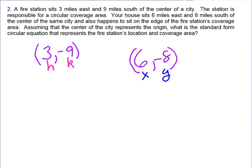So I need to plug these into my equation for a circle. It's always x minus h. So we'll have six minus three squared plus y minus k. That would be negative eight minus negative nine, which will make it positive, squared.